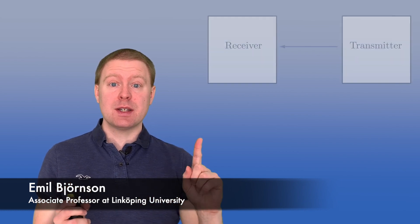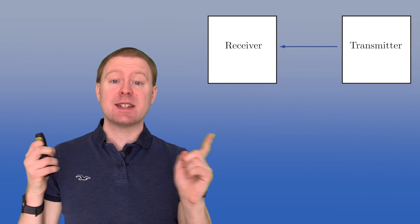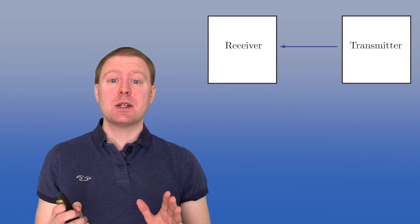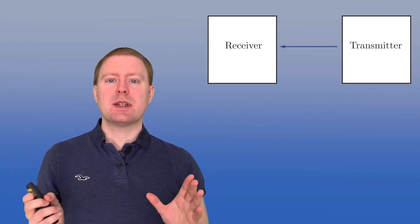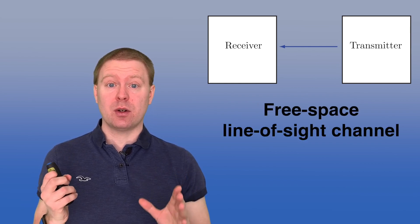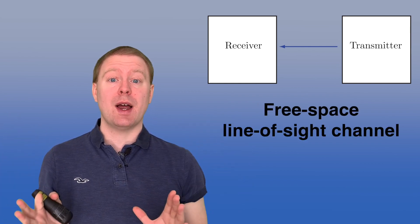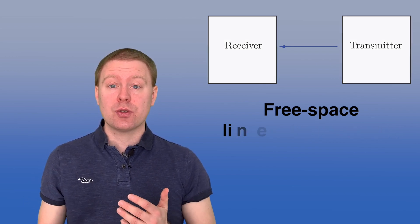Line-of-sight channels describe the case where you have a transmit antenna and a receive antenna that are seeing each other. In this video we will characterize the channels in the simple free-space line-of-sight case, when there are no other objects around that can reflect or scatter the signals.